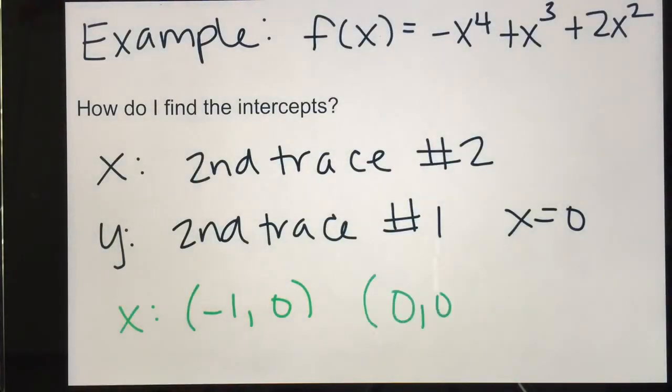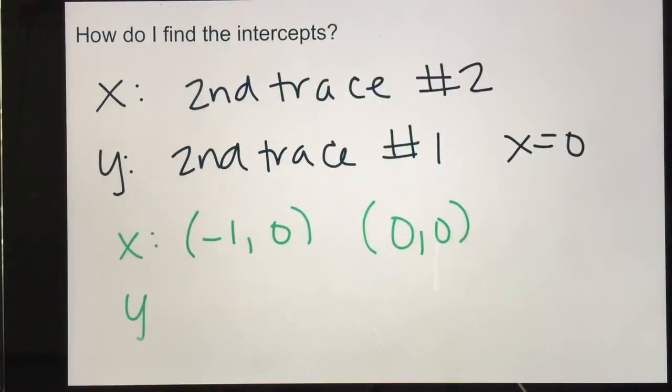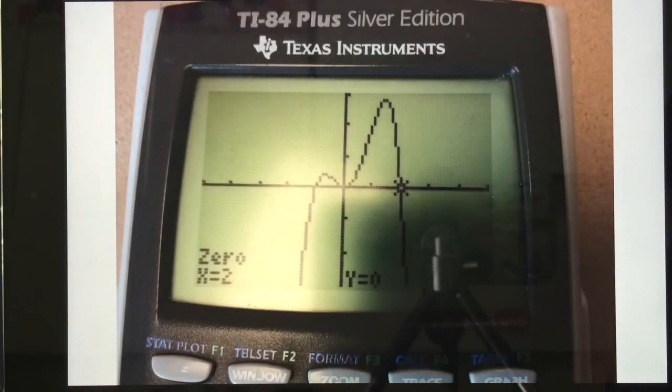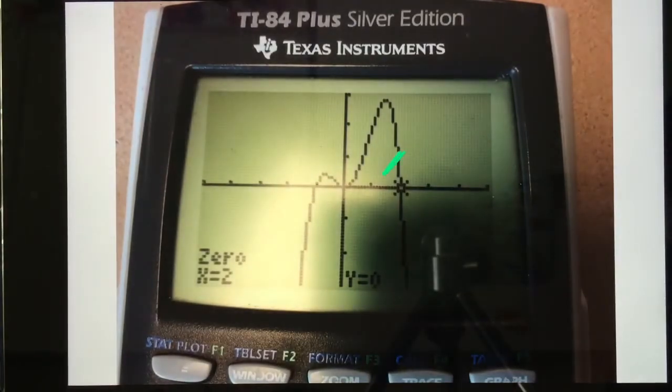So for x-intercepts, we have 0, 0. And then for y-intercept, we also have 0, 0. And then we have one more zero of the graph. Second trace option number 2, left bound, right bound. And when I do that, I find that that point is 2, 0.